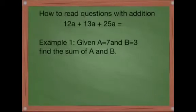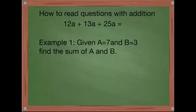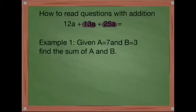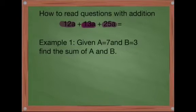First, how do we read a question with addition? If we look at this question we have 12a plus 13a plus 25a — we use plus when we are reading addition. Now, 12a is just like 12 apples, 13a is like 13 apples, and 25a is like 25 apples. So 12 apples plus 13 apples plus 25 apples gives us a total.